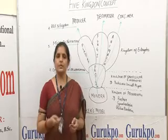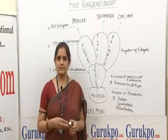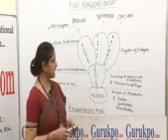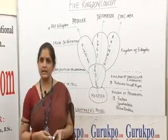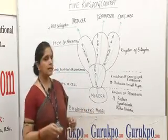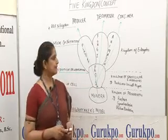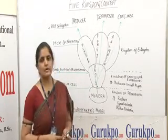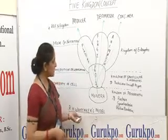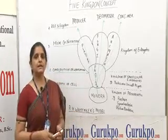For example, Euglena bears both the characteristics of plants and animals, so it was unclear whether to place it in the Plantae or Animalia Kingdom. Additionally, Euglena is a unicellular organism. Finally, the Five Kingdom Concept came into existence and it was proposed by R.H. Whittaker in 1959.